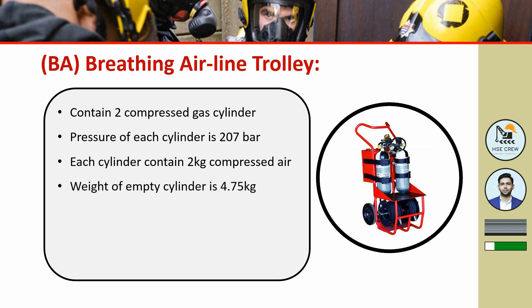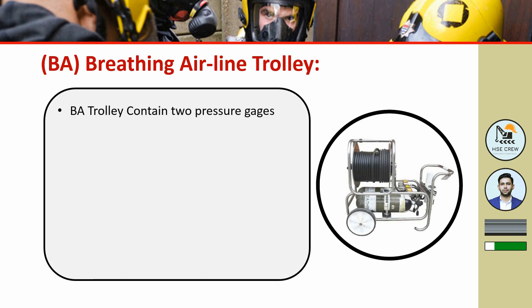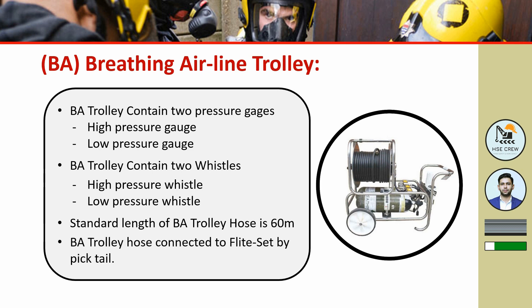The weight of an empty cylinder is 4.75 kg. Each cylinder provides 45 minutes of breathing time, divided into 33 minutes of working time and 12 minutes of warning time. The BA trolley contains two pressure gauges — a high pressure gauge and a low pressure gauge — and also contains two whistles: a high pressure whistle and a low pressure whistle.